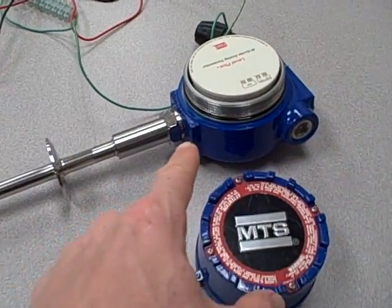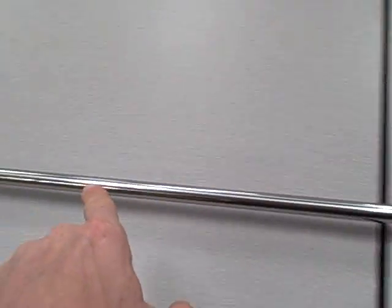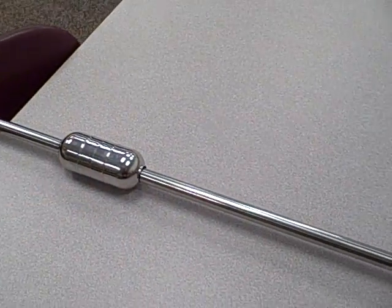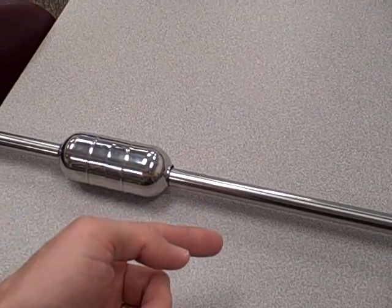Inside the blue housing is an electronics package that passes an electric current pulse through the center of that rod at occasional intervals. When the pulse goes through the rod, it creates a circular magnetic field around the rod.